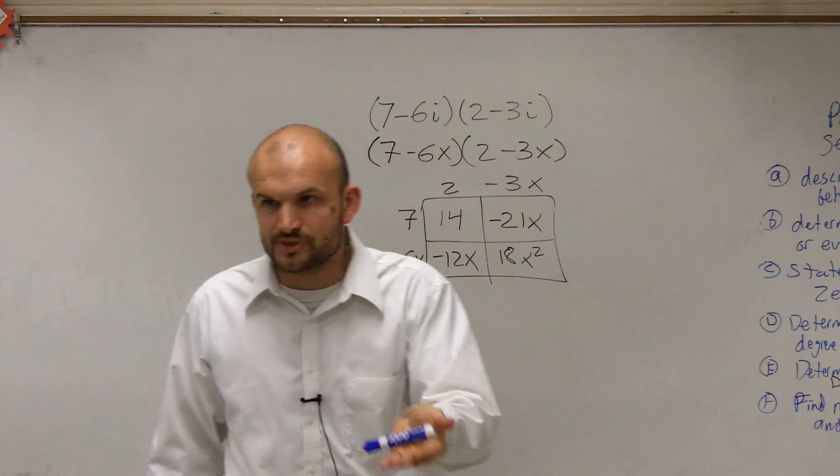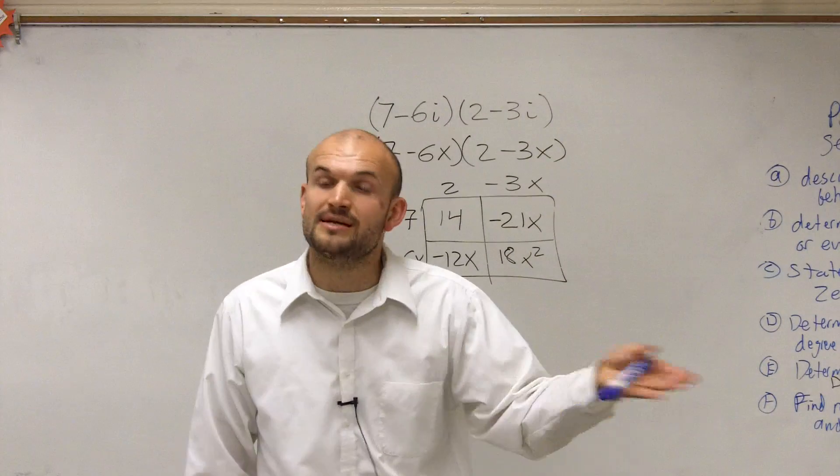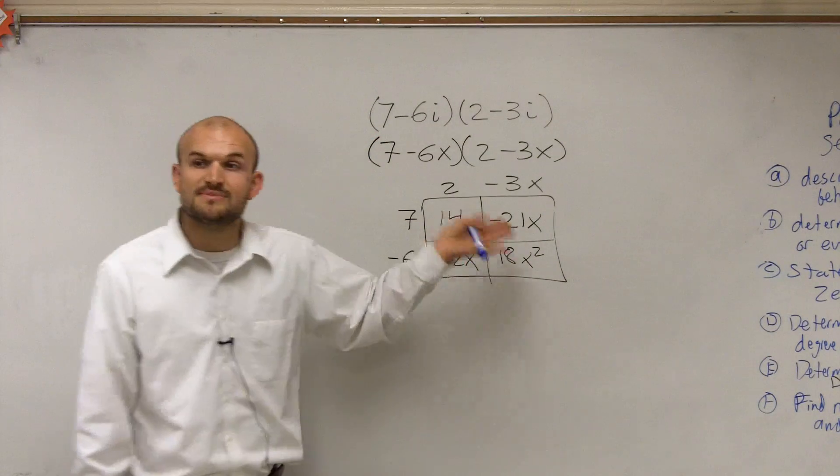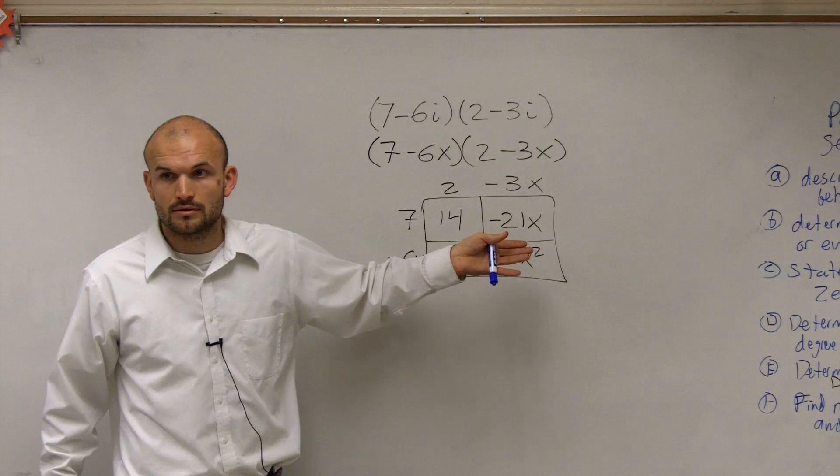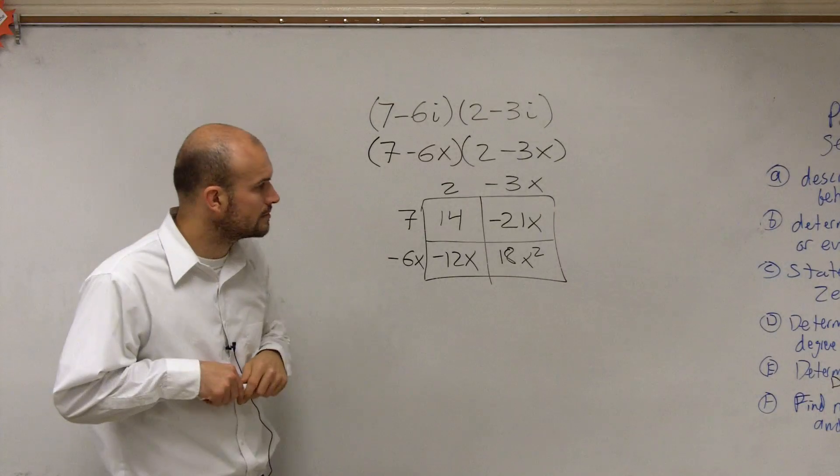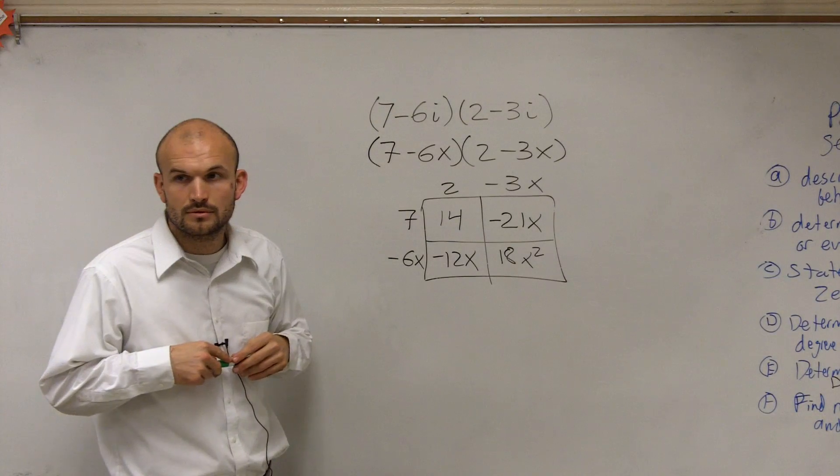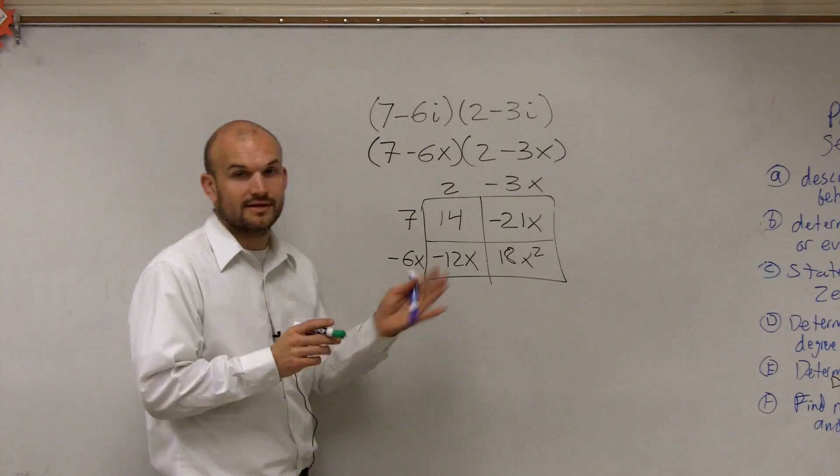Just like 3 times 3 is 3 squared, right? What's 3 squared? It's 3 times 3. So if I have 3 times 3, that's going to be 3 squared. So x times x is going to be x squared. Does that make sense?